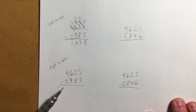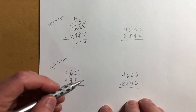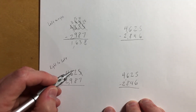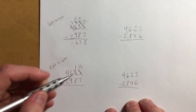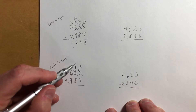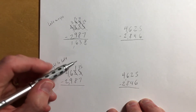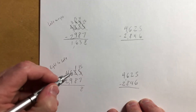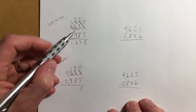Down here we have the traditional right-to-left method, and we're actually going to be using the same numbers we used up here, just to keep it simple. I've got my five — obviously I can't take seven away — so I'm going to cross these two out. That leaves me with a one and a fifteen, because we decompose a ten and move the ten ones over here, just like in the drawing. So we've got fifteen minus seven, which equals eight. I can't do one minus eight, so I have to decompose my six — that becomes an eleven.